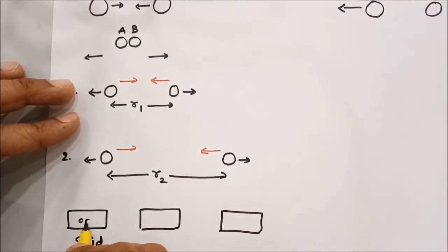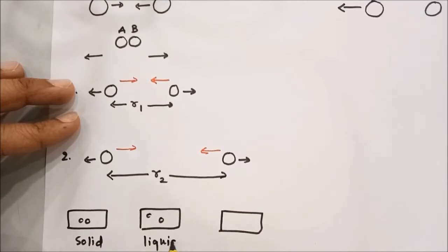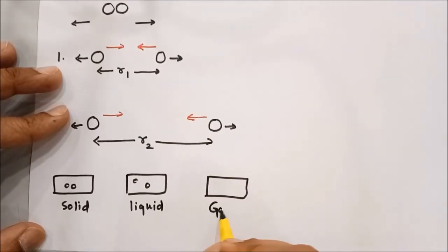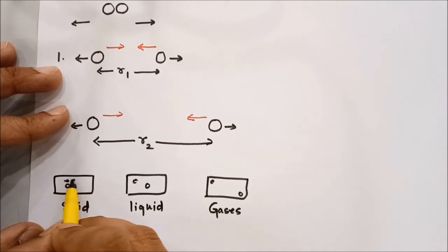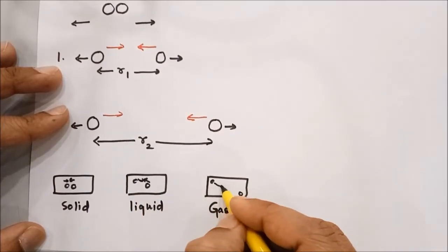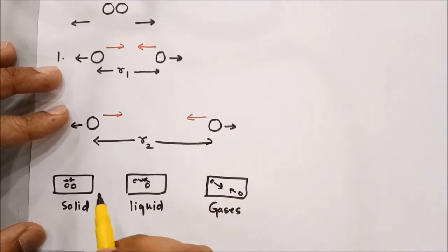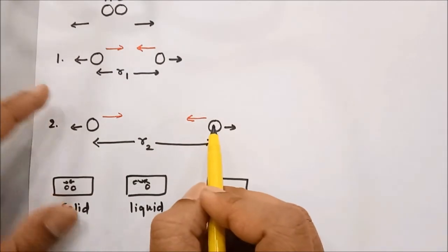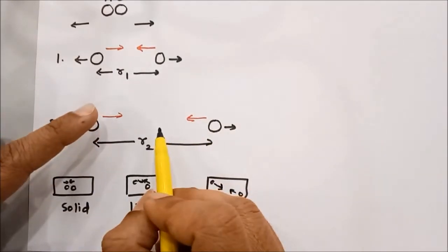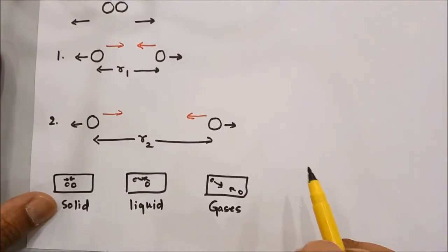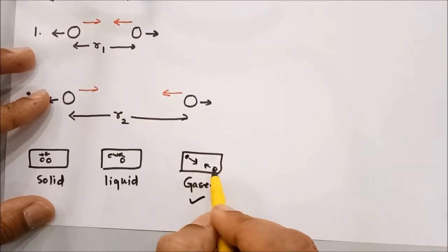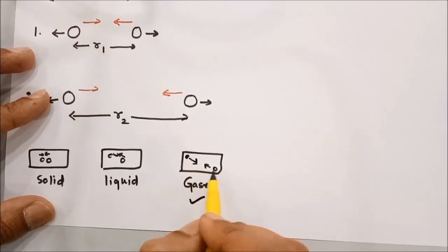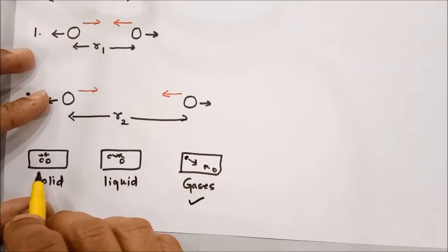In solids the particles are very near. In liquids the particles are at a comparatively larger distance. In gases the particles are at a very large distance. Here also the atoms are attracting one another. But as we discussed, if there is a force of attraction between two bodies, the further they are, the more is the potential energy. So gases are going to have the highest potential energy, because even though the atoms are attracting, they are at a very far distance. The potential energy of gases is highest and that of solids is the lowest.